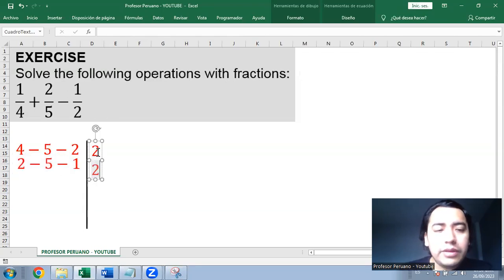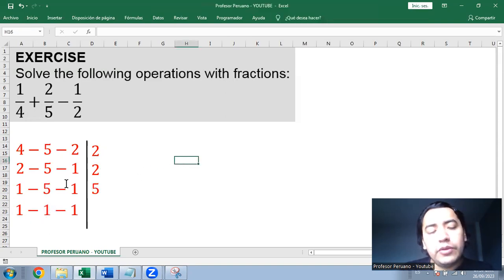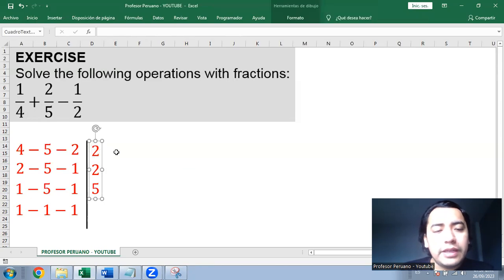Then we continue dividing one more time by 2. So we divide and it's 1, 5, and 1. Then we divide by 5, that is another prime number. So we get 1, 1, 1. When you get all numbers equal to 1, that's the end of the decomposition.